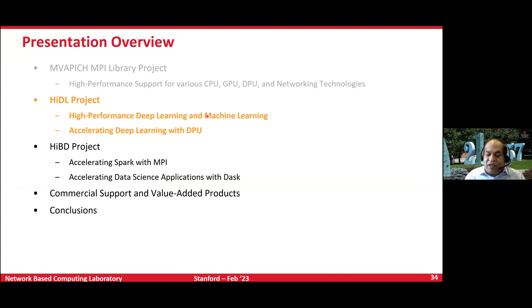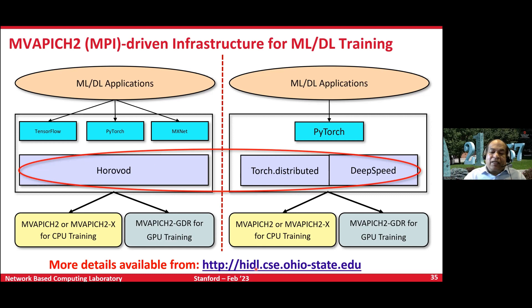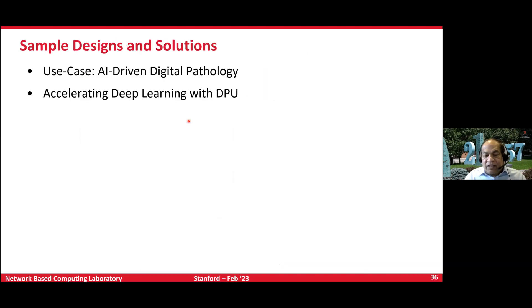Since the MPI library provides scale-up and scale-out, can we take advantage of it for machine learning and deep learning? This is what we've done. Frameworks like Horovod, Torch Distributed, and DeepSpeed are middleware used by TensorFlow, PyTorch, and MXNet, on top of which ML/DL applications run. We've done a tight integration with our MVAPICH library — called the High-DL or high-performance DL project. Users can download our MPI and build these stacks with detailed instructions, without needing to change their TensorFlow, PyTorch, or K-Means applications, while getting a performance boost. I'll show two examples: AI-driven digital pathology and DPU-accelerated deep learning.